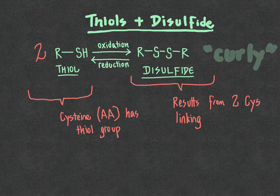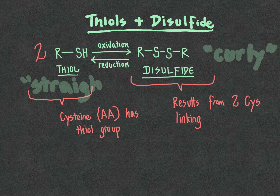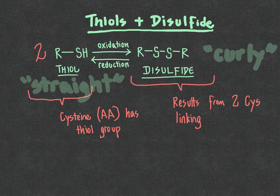Versus on the other side, the thiol group that has not been oxidized results in what we would generally describe as straight hair. So we can interconvert between these two as desired. In the case of someone that has disulfide-rich, curly hair, if they want straight hair, they treat the disulfide with a reducing agent to convert it into the thiol form.